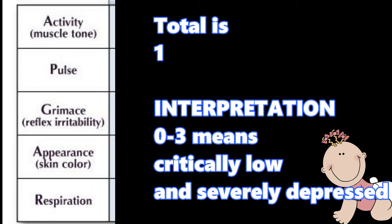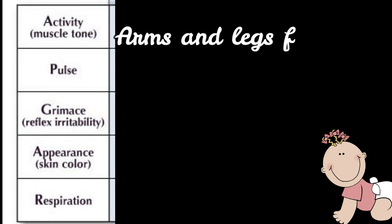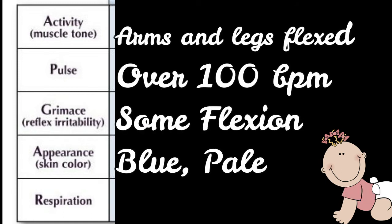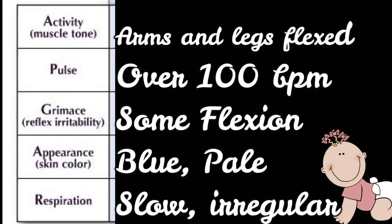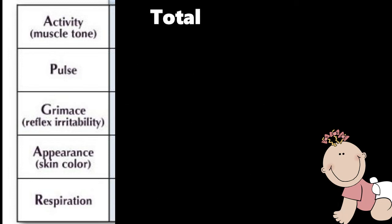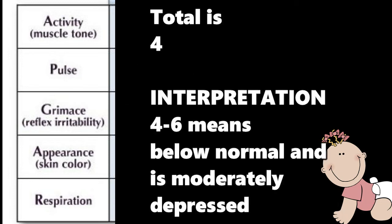For arms and legs flexed activity, over 100 BPM for pulse, some flexion for grimace, blue and pale appearance of the skin color, and low irregular respiration, the score is 1, 2, 1, 0, 0. The total is 4 points, which has the interpretation that 4 to 6 means below normal and is moderately depressed baby.